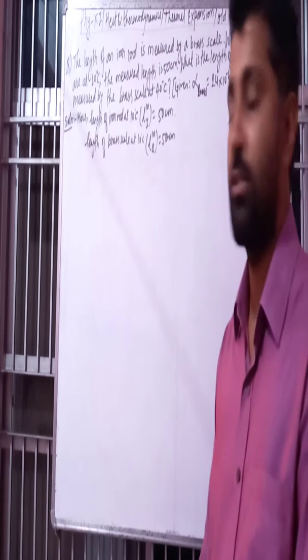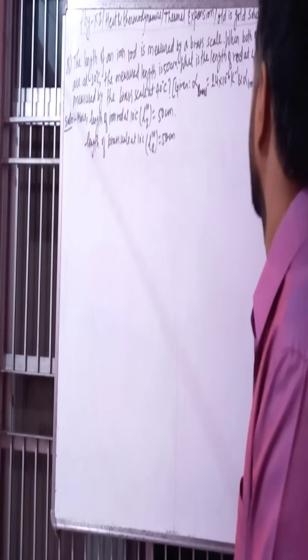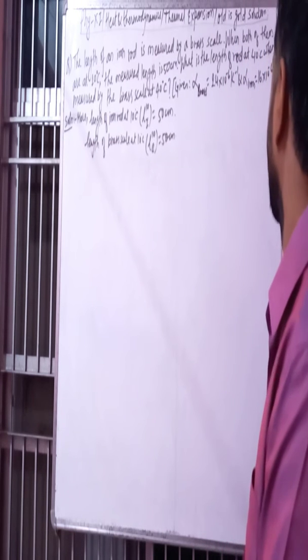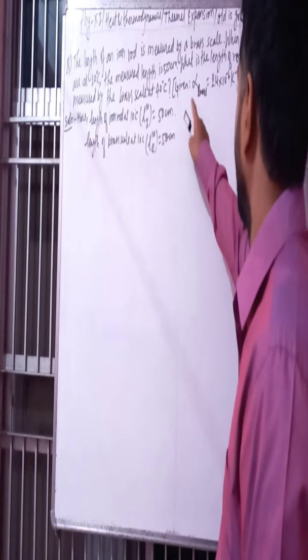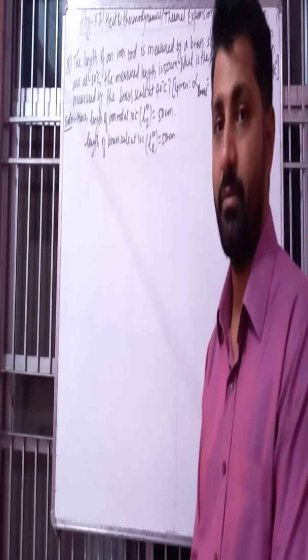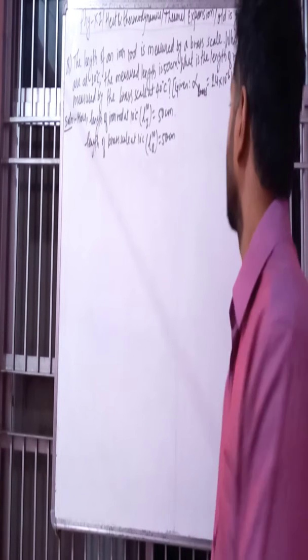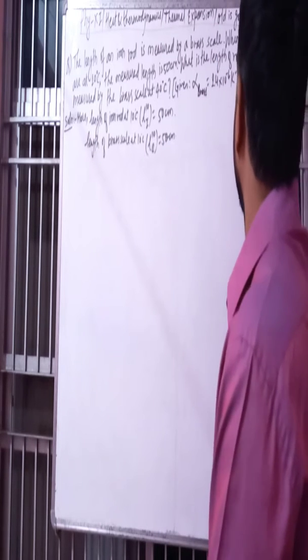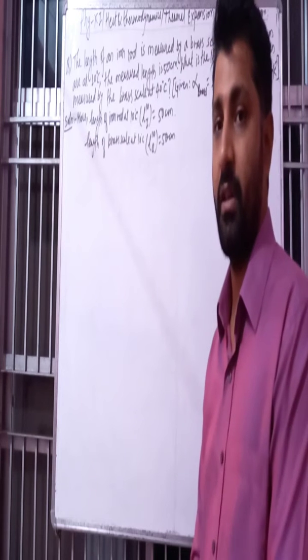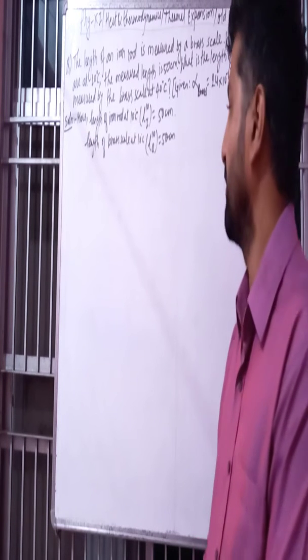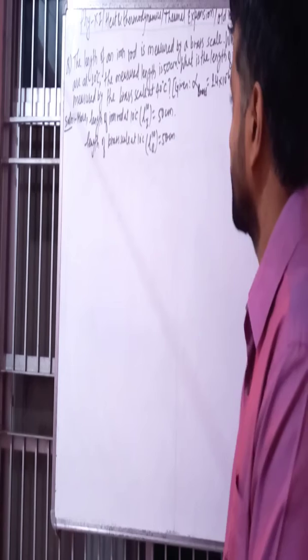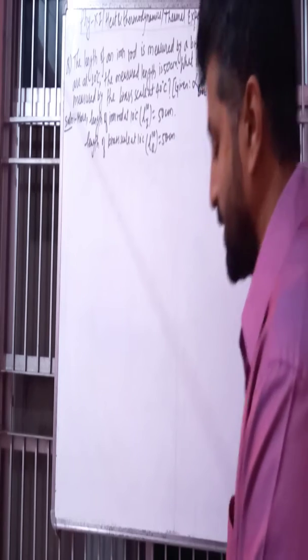I will show you the linear expansivity of brass and the linear expansivity of iron. Alpha for brass and alpha for iron equals 16 into 10 to the power minus 6.